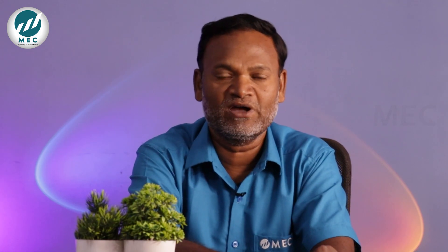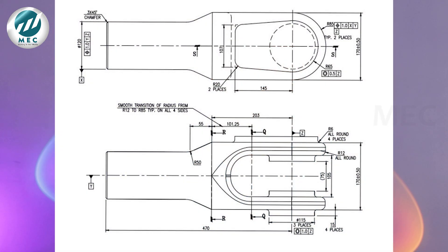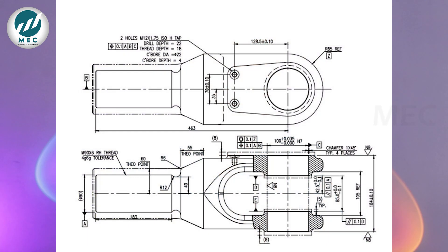The casting drawing contains all linear and angular dimensions, including overall dimensions and GD&T representations. This drawing is mainly used for casting the product. The machining drawing is separate because machining takes place at a different location — once the casting process is completed, the component is moved to the machining process.